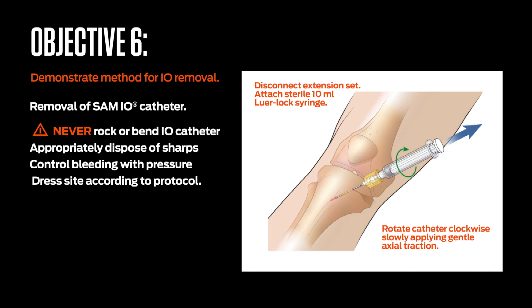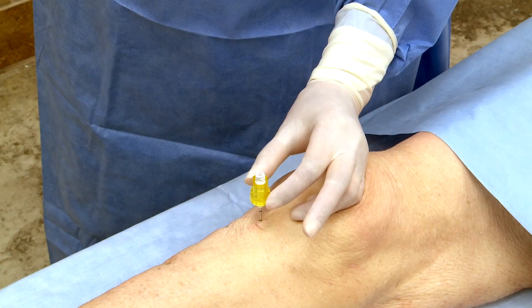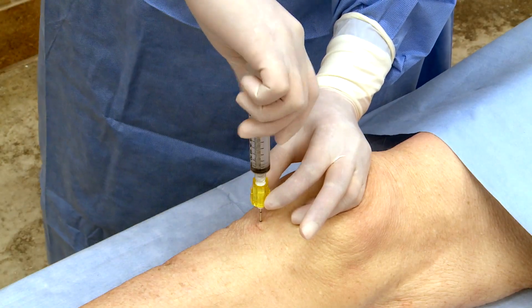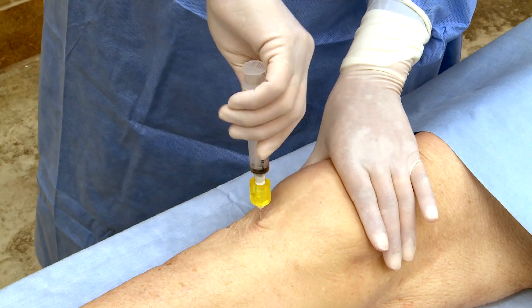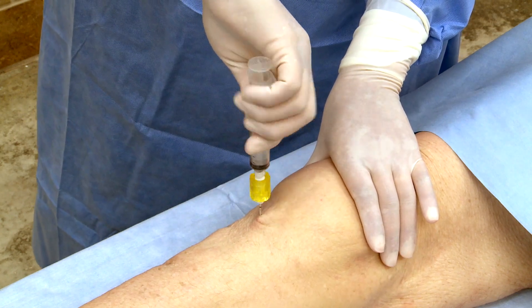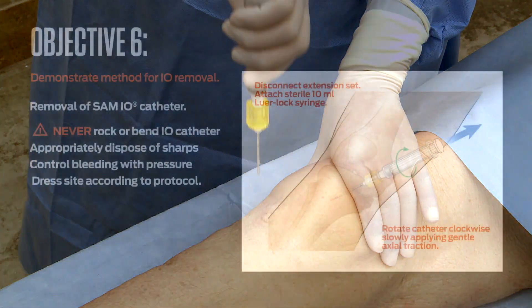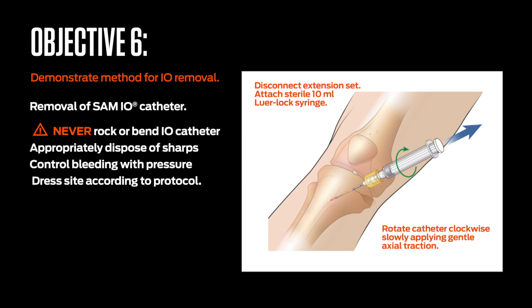To remove the SAM-IO catheter from the patient, disconnect the extension set. Attach a sterile 10 mL Luer-lock syringe to the hub of the catheter while continuously rotating the catheter clockwise to the right. Slowly apply gentle traction and maintain axial alignment during withdrawal. Do not rock or bend the catheter during the removal process. Once the catheter has been removed, immediately place the syringe and catheter in an appropriate sharps container and dress the site according to protocol or standard.